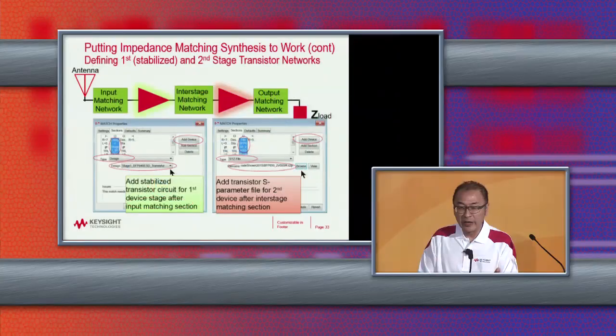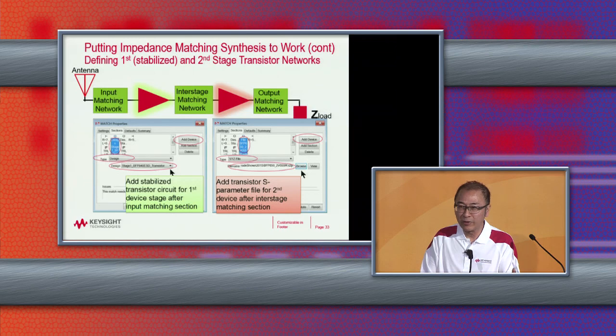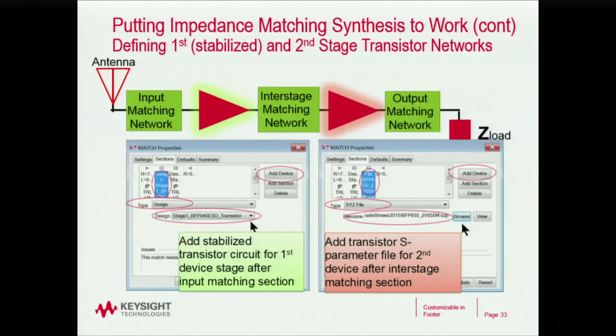This is where we insert our stabilized device — in this case an S-parameter file with a resistor, which can be your custom schematic. Stage two is an S-parameter measurement, but it could also be an X-parameter file or a model taken from Modelytics. As discussed in the previous MicroApps talk by Larry about the different models, once you have those models, you've got to match them — and this is exactly where impedance matching comes in.